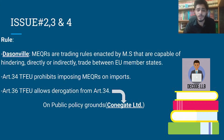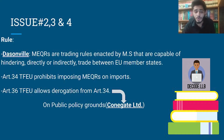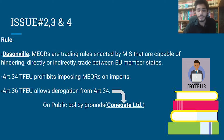Here are the rules for issues two, three and four as they are interlinked. First we have to see whether the Bulgarian measure is an MEQR or not. For that we will look at the Dassonville definition of MEQR. MEQRs, or measures equivalent to quantitative restrictions, are trading rules enacted by a member state that are capable of hindering directly or indirectly trade between European Union member states. Article 34 then prohibits imposing MEQRs on imports.